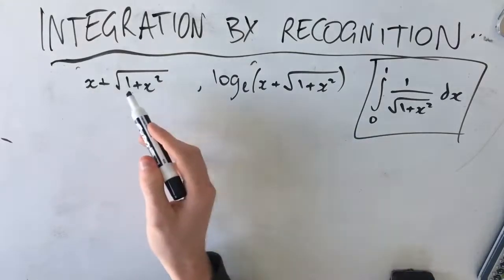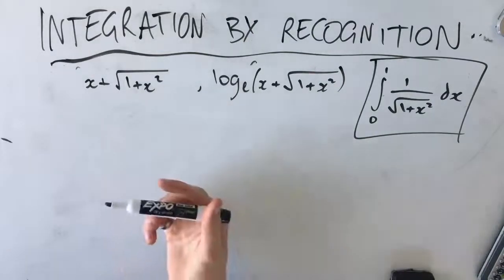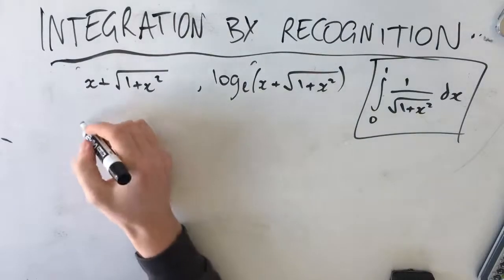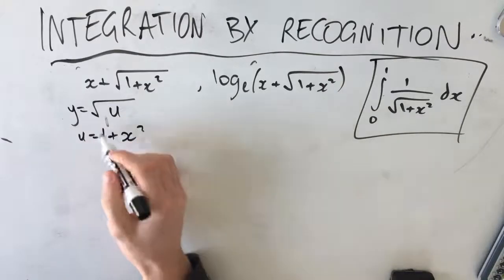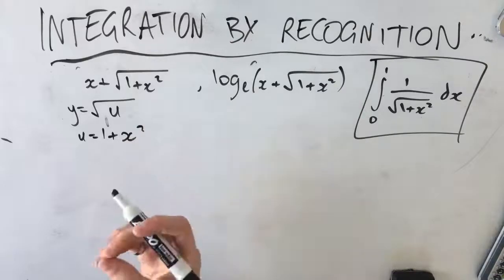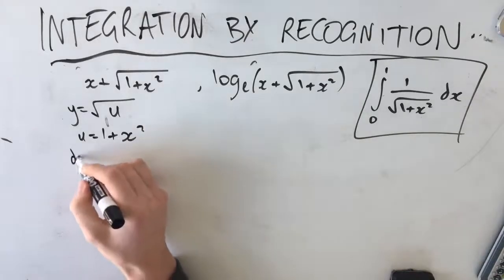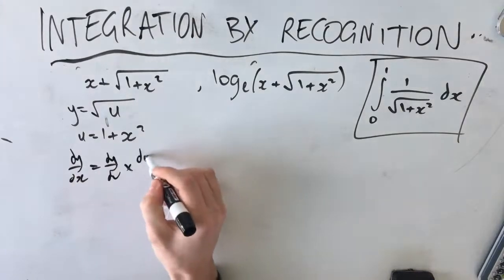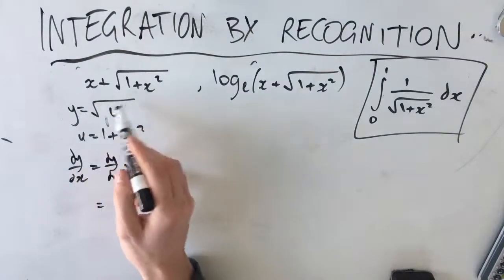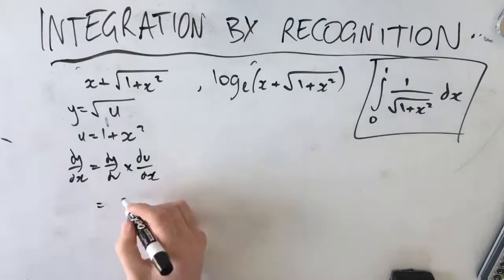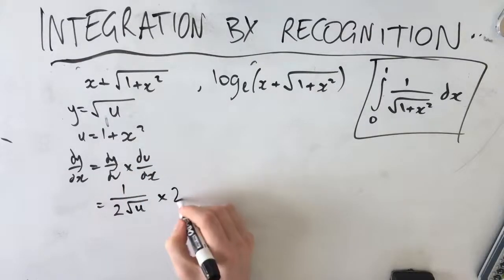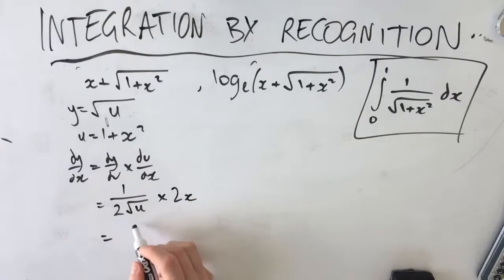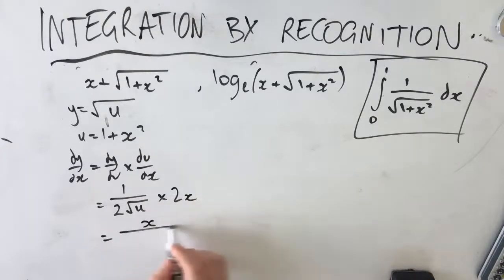The derivative of x is just 1. The derivative of root(1 + x²) requires the chain rule, since it's a function within a function. Let y equal root(u) where u equals 1 + x². By the chain rule, dy/dx equals dy/du times du/dx. dy/du is the derivative of root(u), which is 1/(2·root(u)), and du/dx is 2x. Cancelling the 2s gives x over root(1 + x²).